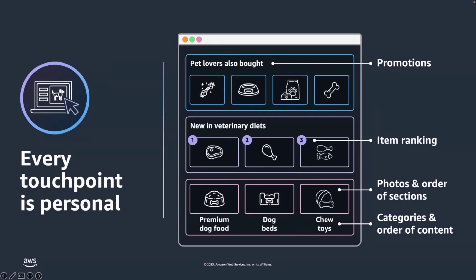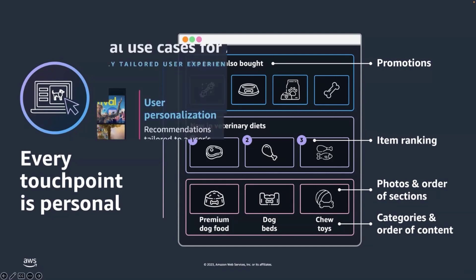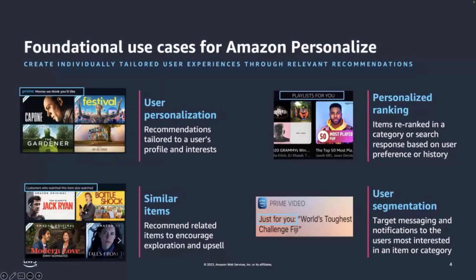Amazon Personalize is a machine learning service that makes it easier for any developer to create individualized recommendations for websites, apps, and emails, without any ML expertise required. We support a number of use cases across several different industries — retail, M&E, travel and hospitality, for example.